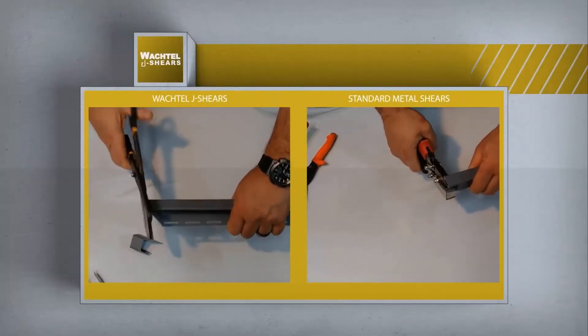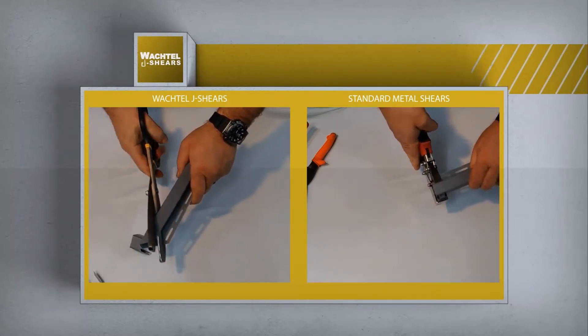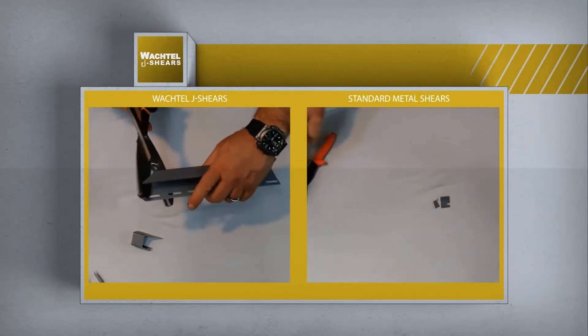The Wachtel J-Shears will cut your J-Channel in one single cut. They also cut up to a 45 degree angle effortlessly.